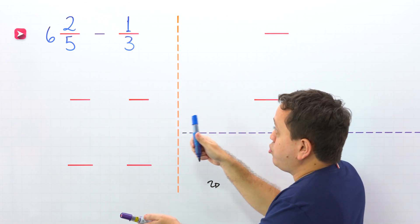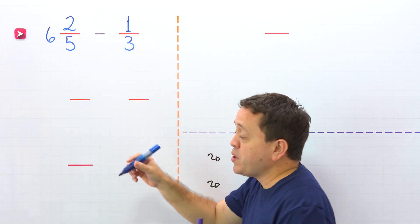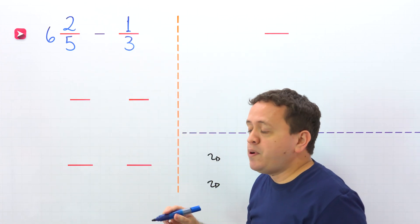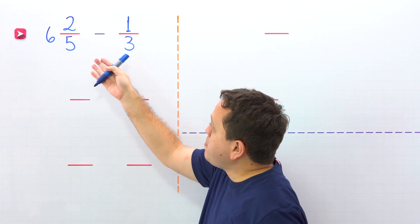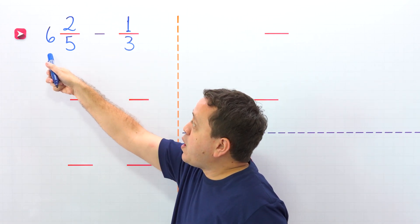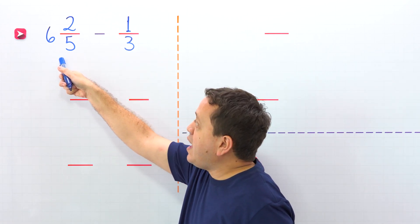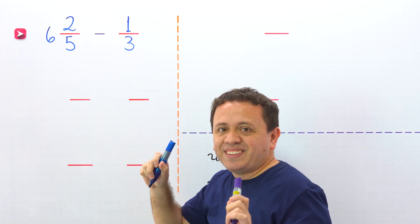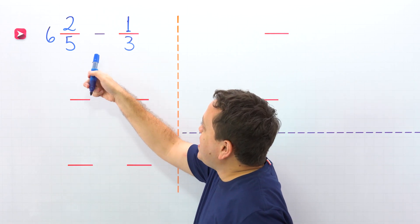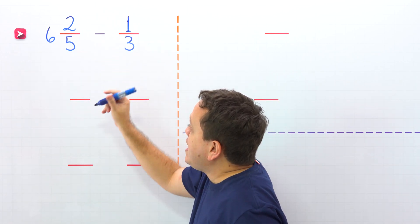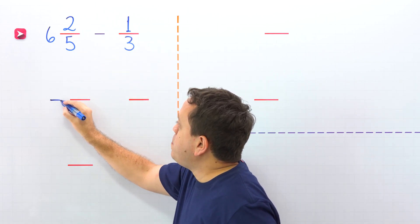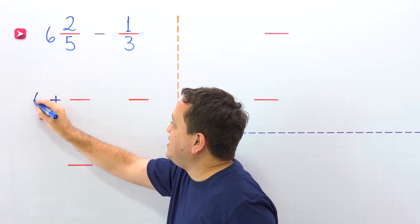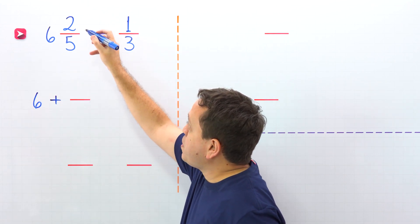Pay attention. The key to solve this problem is to remember that a mixed number is the sum of a whole number and a proper fraction. So first, we're going to rewrite the mixed number 6 and 2 fifths as the sum of a whole number, 6 in this case, and a proper fraction.